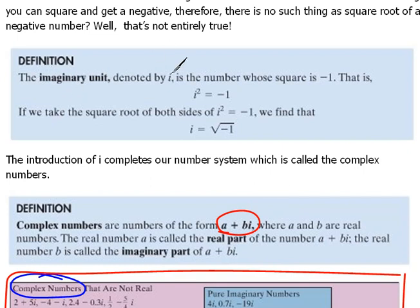Okay, the imaginary unit, denoted by this i, is defined as the number whose square is negative 1. Very fancy way to say i squared equals negative 1. This is something that you have to know. You just have to memorize it.